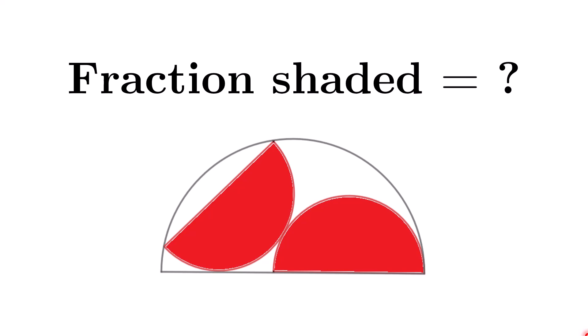So over here we have two identical semicircles. This is the point of tangency, this is the point of tangency, and these two points are on the larger semicircle. So the goal of this question is to find out what is the fraction of the larger semicircle that is shaded.